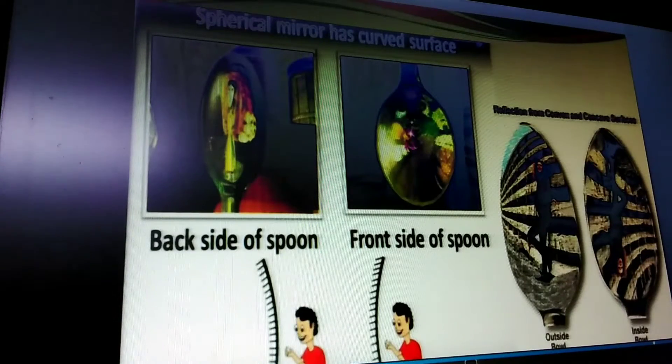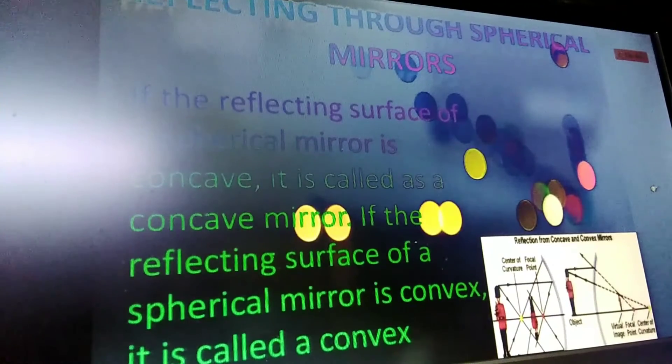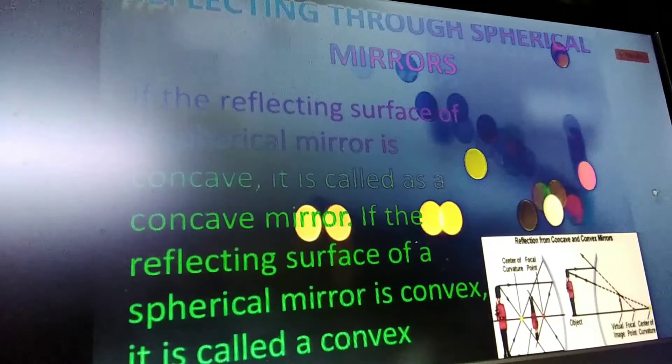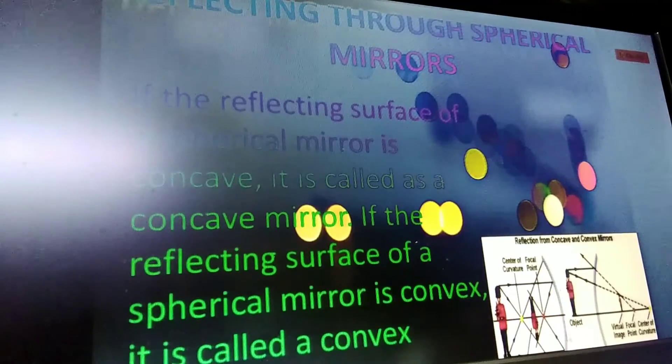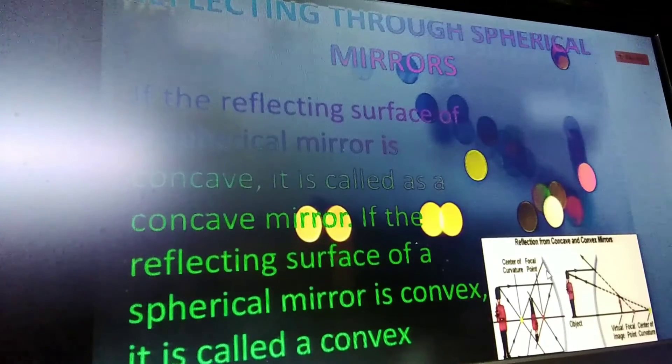Spherical mirrors have curved surfaces, like the back and inside of a spoon. If the reflecting surface is inward, it is called a concave mirror.